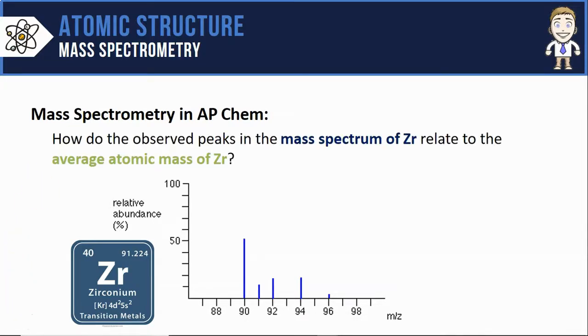Almost all of the time AP Chemistry will ask how the observed peaks in a mass spectrum like this one for zirconium relate to the average atomic mass of that element.